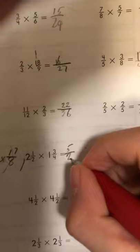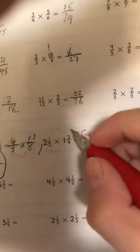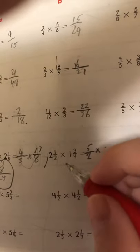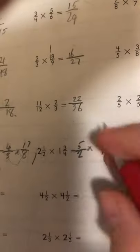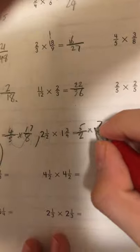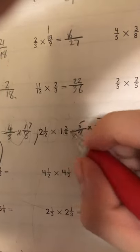5 over 2 times, 1 times 4 equals 4, and then 4 plus 3 equals 7, so that would be 7 over 4.